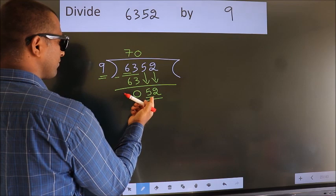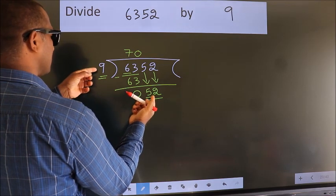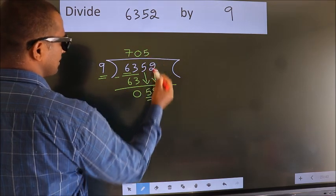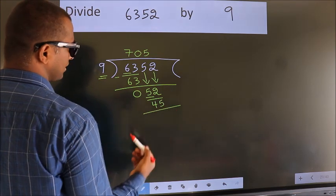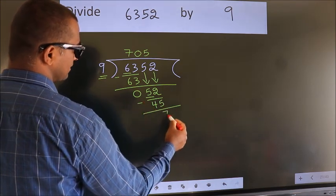A number close to 52 in the 9 table is 9 times 5, which is 45. Now we subtract. We get 7.